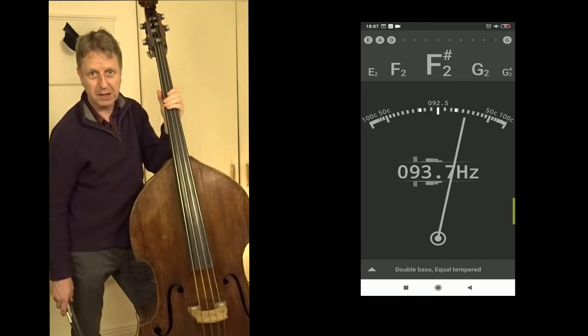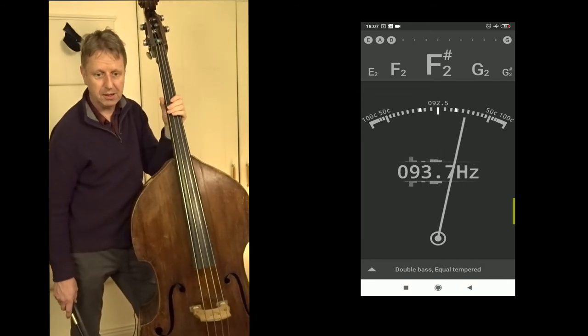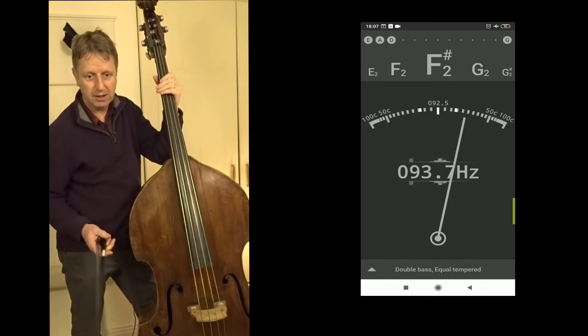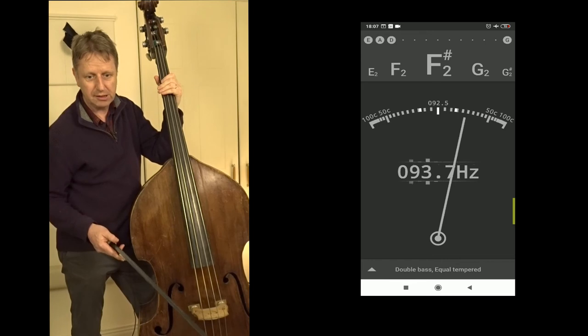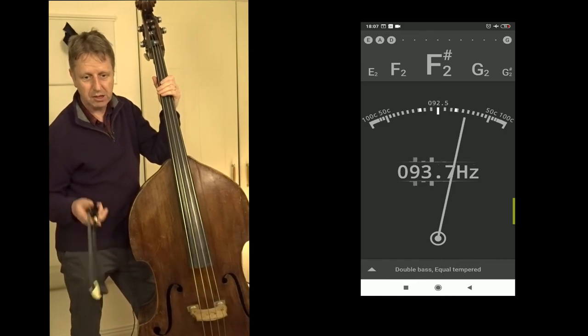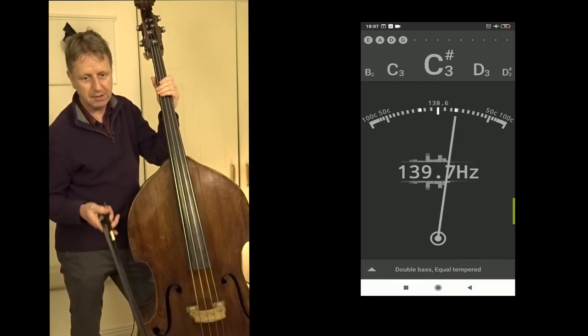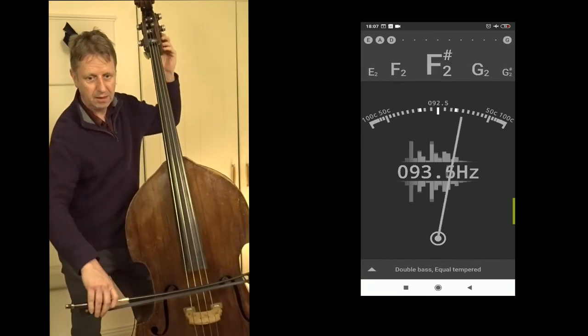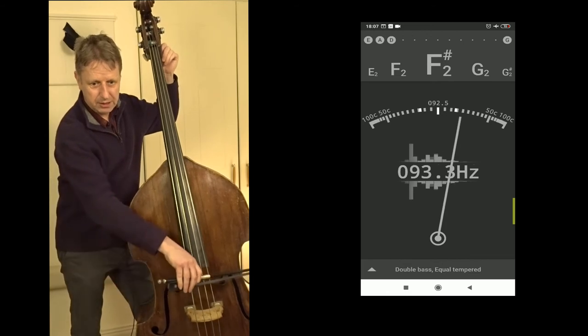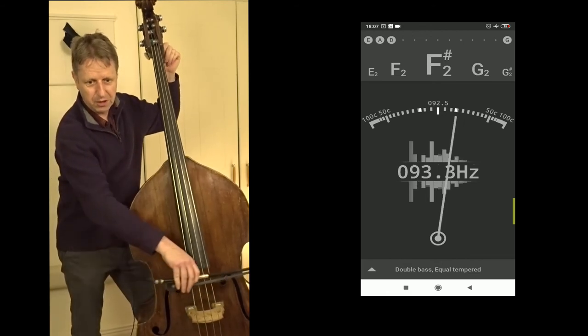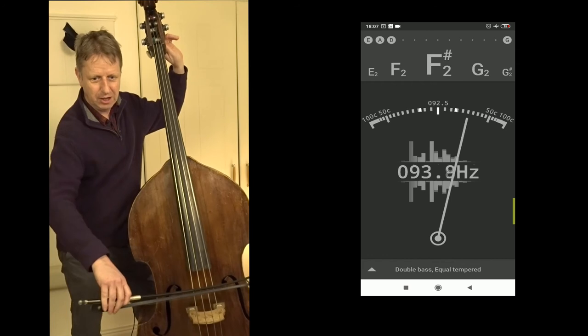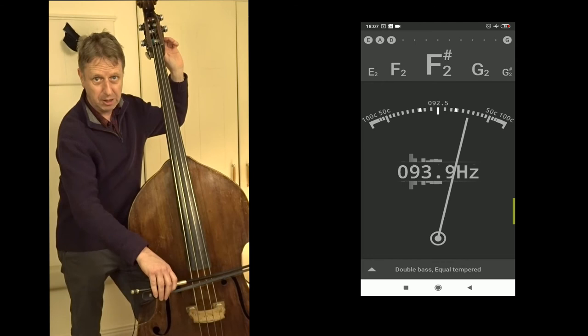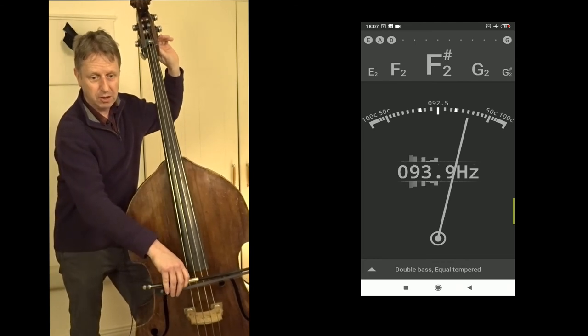This often happens with a bass if it's been maybe in a car or something. These get knocked in transport and maybe one string can be quite a bit out. In this case it's the G string, it's reading F sharp, it's only a semitone lower than the G, but I need to give this one certainly more tuning up. So it's now reading too high, but remember that's an F sharp that's too high, it needs to go right up to a G.